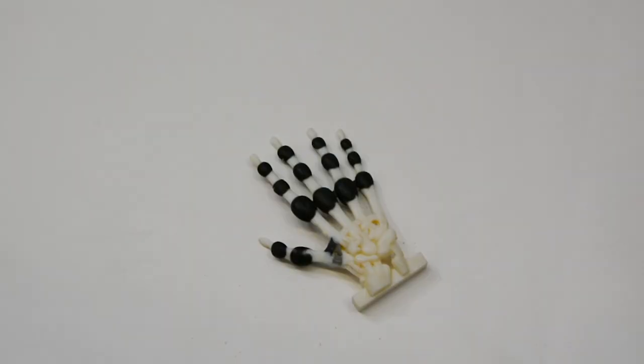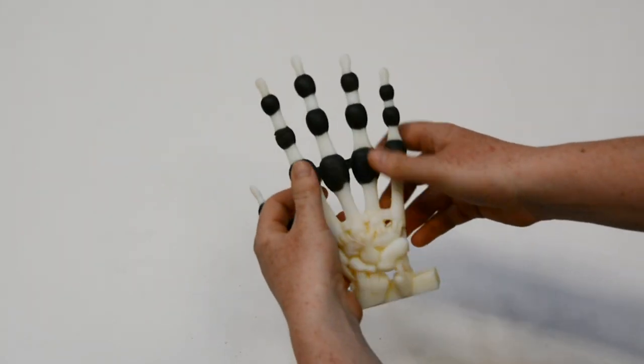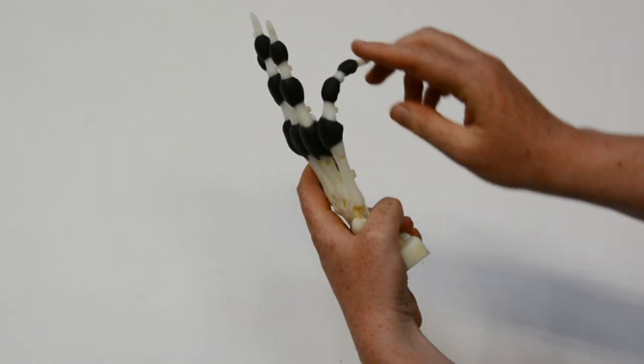So, they used 3D printing to create a skeleton-like hand, integrating materials with different flexibilities to simulate the complex arrangement of bones, joints, and ligaments in the human hand.